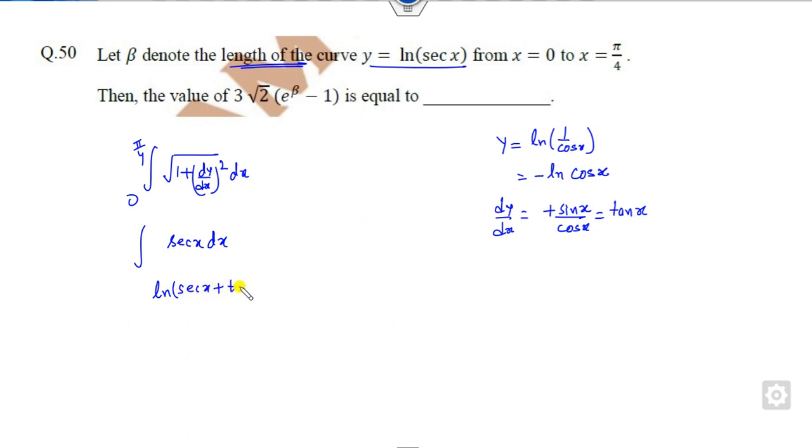The limit is 0 to π/4. Evaluating at π/4: sec(π/4) = √2 and tan(π/4) = 1. At 0: sec(0) = 1 and tan(0) = 0, so this value is 0. If beta is there, this is beta.